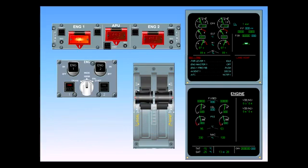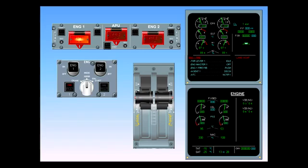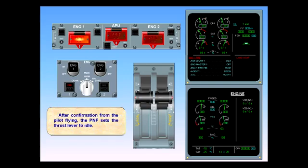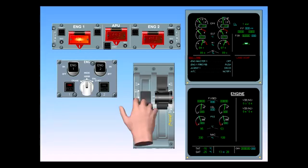The pilot flying maintains control of the aircraft and asks the pilot not flying to perform the ECAM actions. After confirmation from the pilot flying, the pilot not flying sets the thrust lever to idle. Engine one is spooling down. Engine two is accelerating to compensate for the thrust loss.